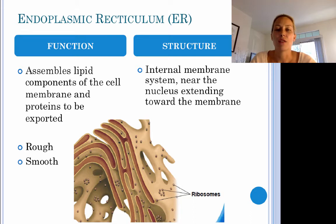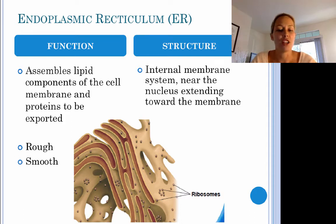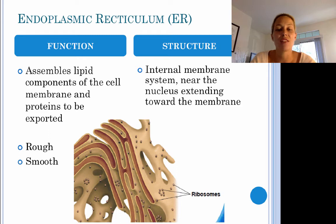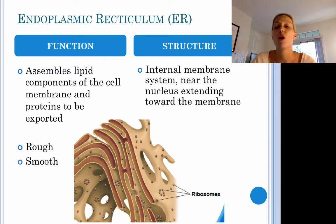Next, we have our endoplasmic reticulum. The rough endoplasmic reticulum is responsible for assembling proteins that are going to be exported out of the cell. The smooth endoplasmic reticulum is responsible for assembling components of the plasma membrane or other membrane structures, and also for detoxification of substances that might enter the cell. For example, liver cells have a lot of smooth endoplasmic reticulum because the liver is responsible for detoxifying substances.